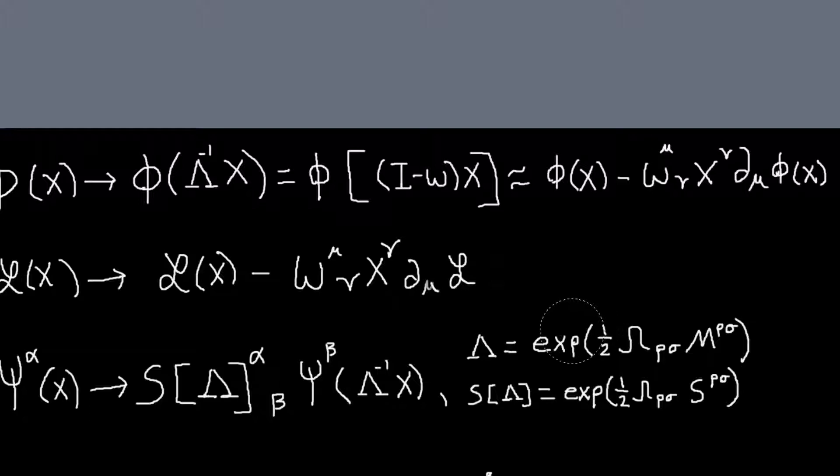So lambda is, and these matrices represent the specific Lorentz transformation you're doing. So these M's are the generators of the transformation. And then the omega, rho, sigma are just a set of six numbers that designate which of the three boosts and three rotations you're doing.